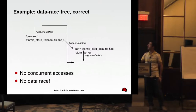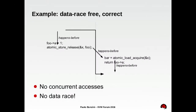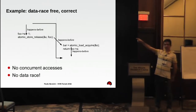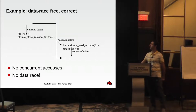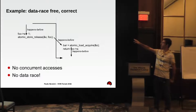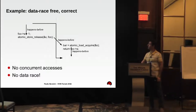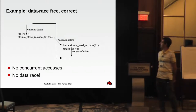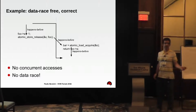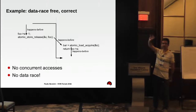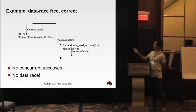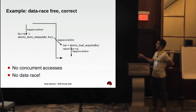Here's an example of two threads executing a data race-free correct program. They assign something with a non-atomic store, then do a store-release of that pointer — foo is written into x. X is loaded by the other thread with a load-acquire, then x is foo — read-only access. Why is this correct? Within each thread you have happens-before, so the assignment and load of the field are well-ordered with the store and load of the pointer. Because this is a store-release to x and the other is a load-acquire from x, you also have happens-before between them. By transitivity, you have happens-before between the assignment of the field and the loading of the field — like a simple ring buffer with no concurrent accesses and no data race.